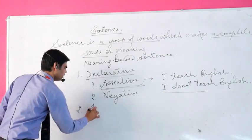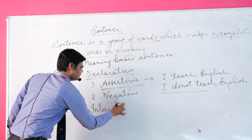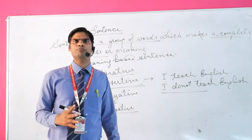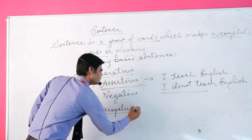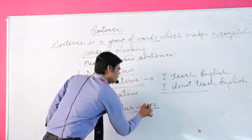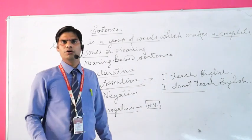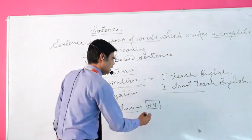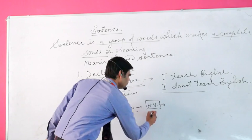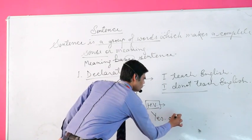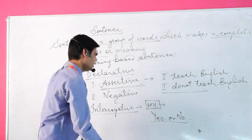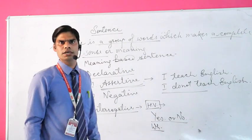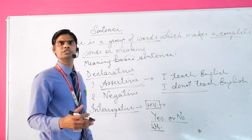The second type is interrogative, as we have already mentioned. We have two types of interrogative sentences. The first type starts with a helping verb. These are simple sentences which start with a helping verb, and their answers can be 'yes' or 'no'.